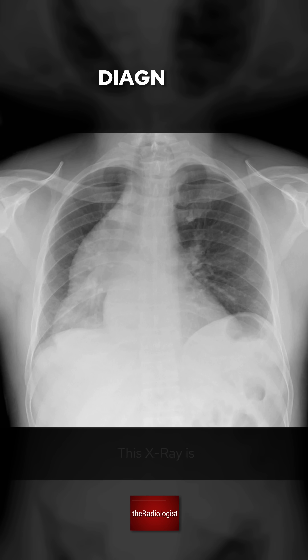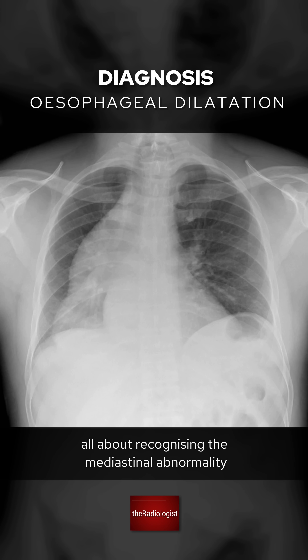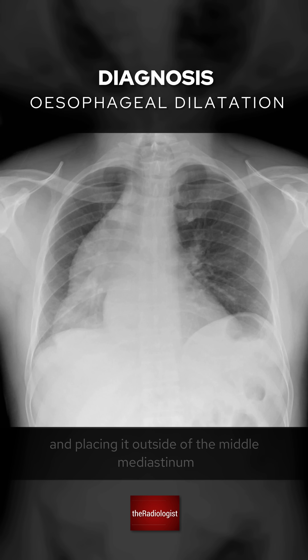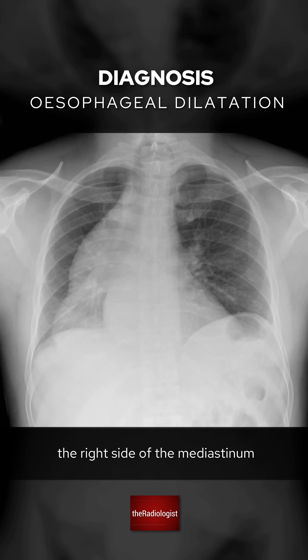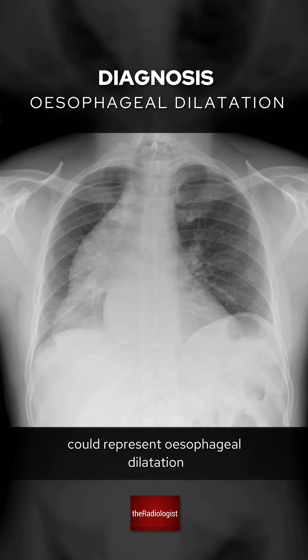This x-ray is all about recognizing the mediastinal abnormality and placing it outside of the middle mediastinum, and realizing a tubular structure occupying the whole of the right side of the mediastinum could represent esophageal dilatation.